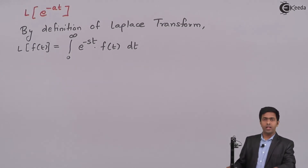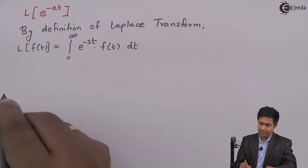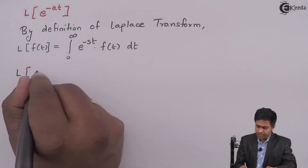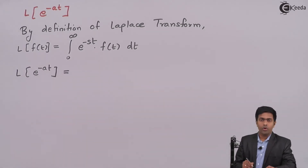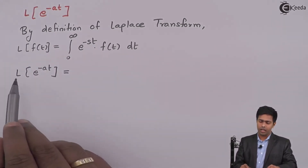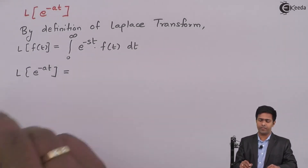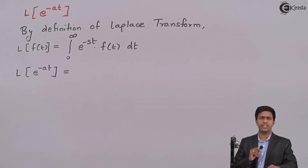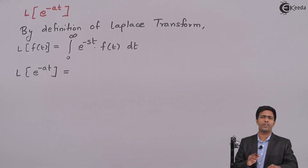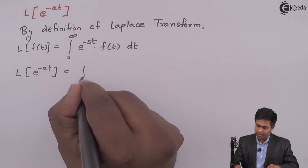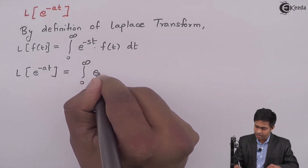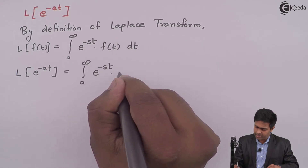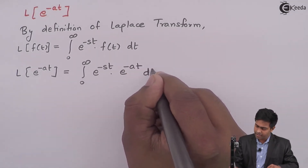Let us use this definition to get the value of Laplace of e raised to minus at. If we compare Laplace of e raised to minus at with the definition, we can easily say that f of t is e raised to minus at. Therefore, on the right hand side also, we will substitute f of t as e raised to minus at. So here we will get integration from 0 to infinity of e raised to minus st into e raised to minus at, dt.